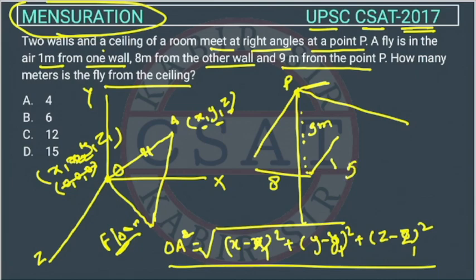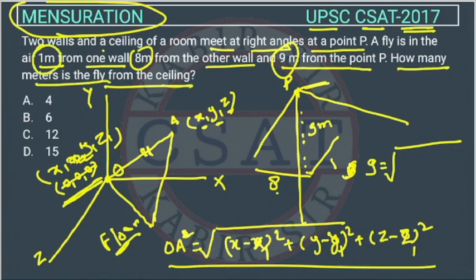This is what they have given? This is 9. They have given this distance is 9. So 9 is equal to same concept we will apply. This point is 0 actually here. Here I told you the formula, right? Otherwise it is 0 if it is initial point. This will become from the distance from one wall, the distance is 1 meter and from second 8 meters. And from the third, we have to find how many meters is the fly from the ceiling. This is the third dimension.